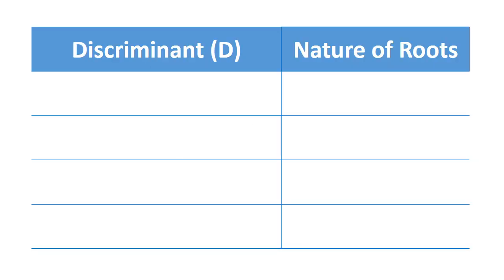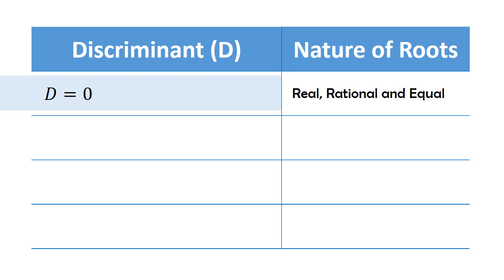And we have four cases. First, if the discriminant is zero, the nature of the roots are real, rational, and equal.